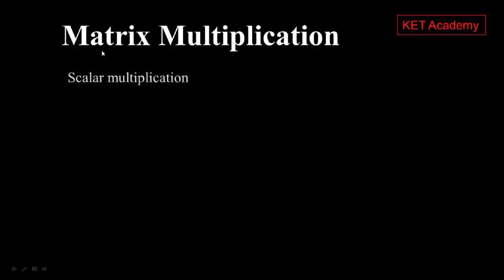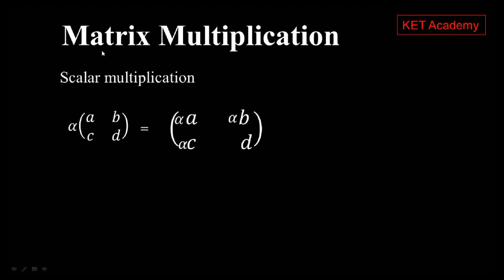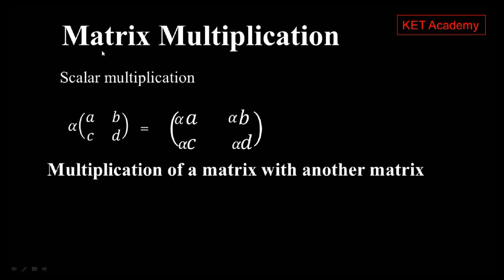Let's look at the first case: scalar multiplication. In this case a matrix is given to you and you are expected to multiply it with a scalar, let's say alpha. What you're supposed to do is simply multiply each element by the scalar alpha, and that'll be it for scalar multiplication.